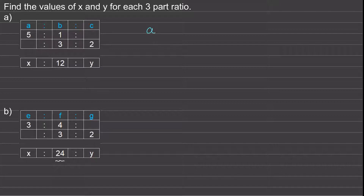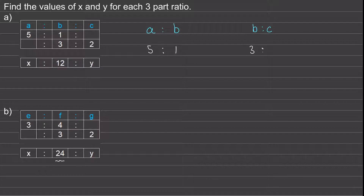The first one will be a to b and the second one will be b to c. We can see from the information given that for a to b we have the ratio five to one — so when a is five, b is equal to one — and for b to c we have the ratio three to two, so when b is equal to three, c is equal to two. In both parts of our question we've also been told that b is equal to 12.